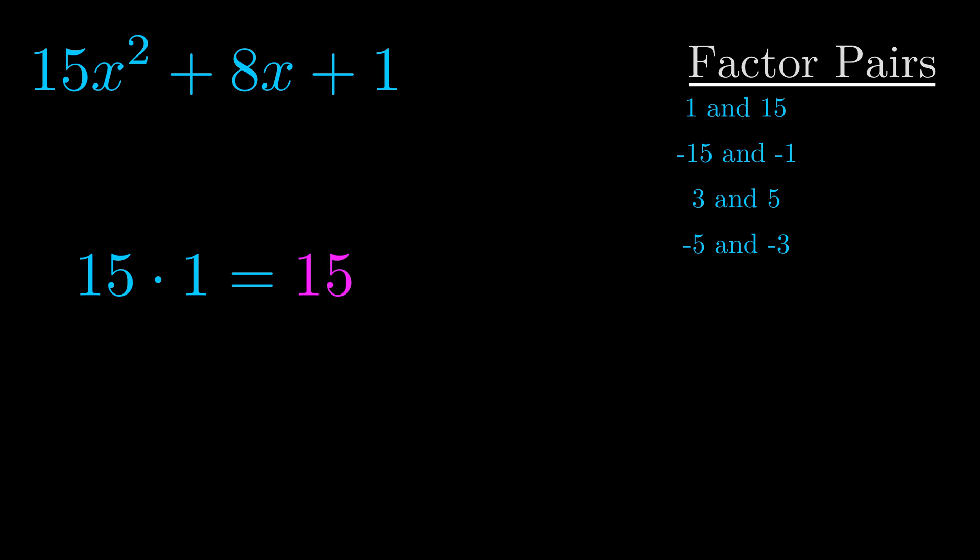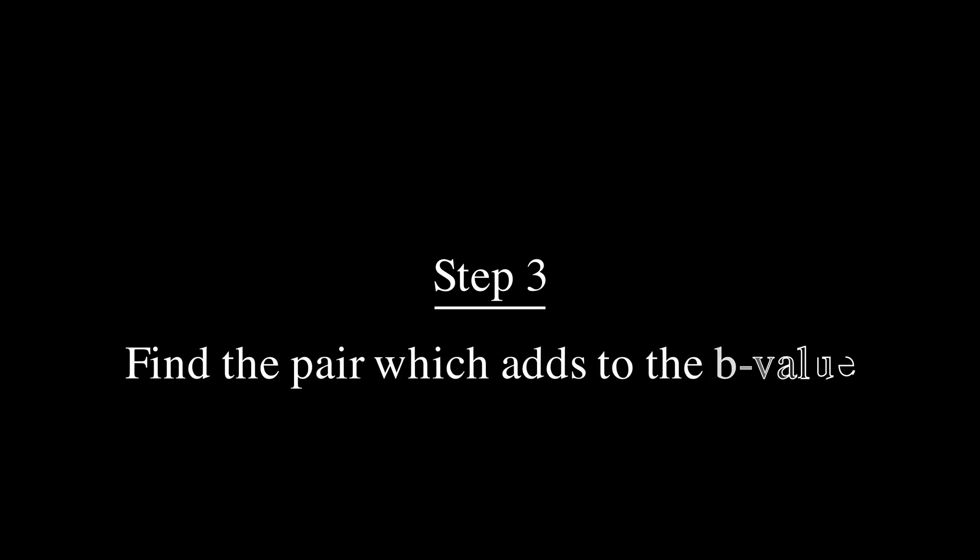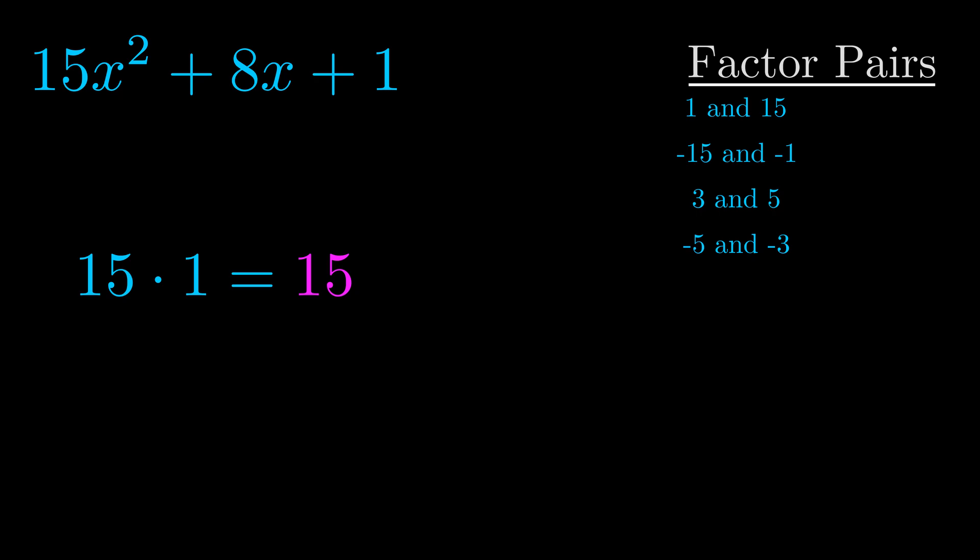Now once you have these factor pairs, the goal is to find which of these pairs adds to the b value. The b value is the coefficient on the x term. That's the middle term, the one that we haven't done anything with yet. And really this is the only factor pair that we need.